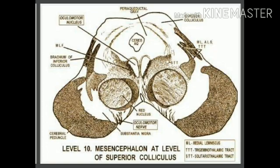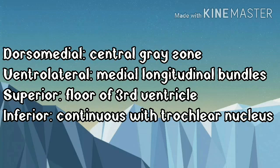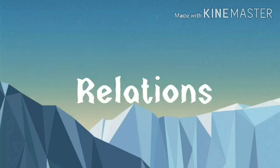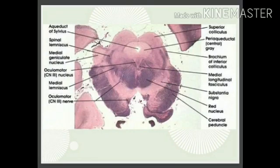Regarding its relations: dorsomedially it is related with the central gray zone surrounded by the cerebral aqueduct; ventrolaterally with the medial longitudinal fasciculus; superiorly it approaches the floor of the third ventricle; and inferiorly it is continuous with the trochlear nucleus. The nucleus is located in the inferior periaqueductal gray matter of the mesencephalon — a complex of both paired and midline motor cells, found from the posterior commissure superiorly to the pontomesencephalic junction caudally in the dorsal midbrain.